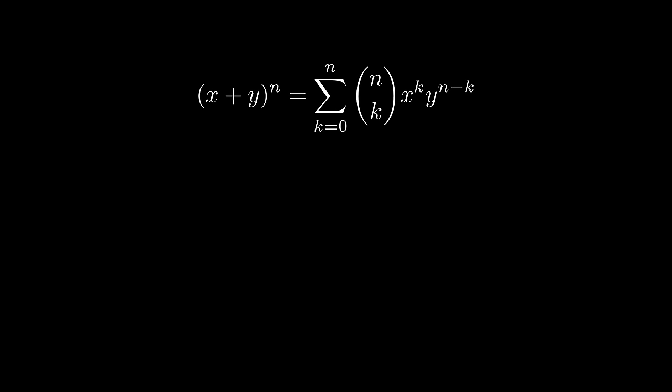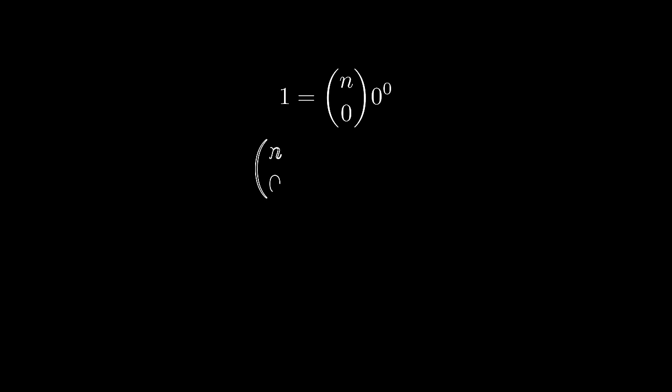In this counter example, if we substitute x and y as 0 and 1, the left-hand side becomes 1, and the right-hand side, starting from the second term, are all 0. There is no doubt. However, the first term,